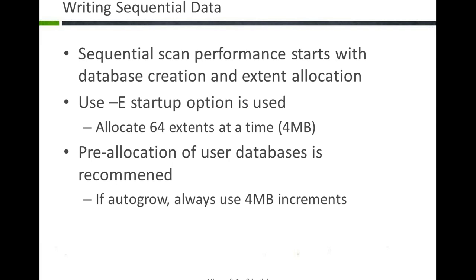With about 10 minutes left, let's cover tuning the data warehouse. The theme around the Fast Track reference architecture is all about tuning the data so it's not fragmented at all. We want to avoid indexing as much as possible if the data is already pre-ordered and laid down on disk. Statistics become incredibly important, but indexes are minimized.